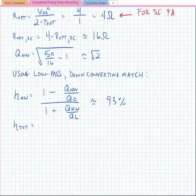So our total efficiency is the efficiency of the topology times the network efficiency. In other words, it's equal to eta_class_B times eta_network. This is equal to 78.5% times 93%, or a total of about 73%.